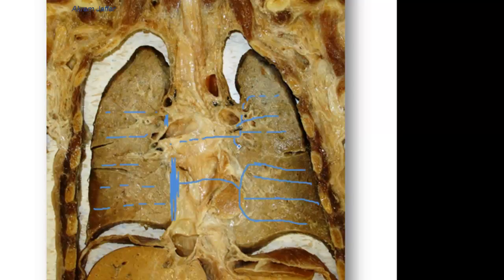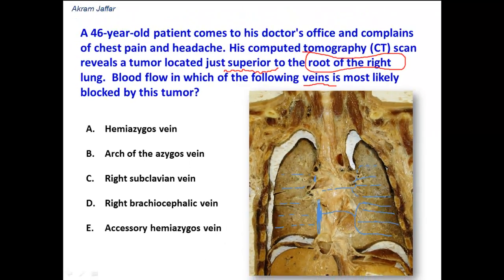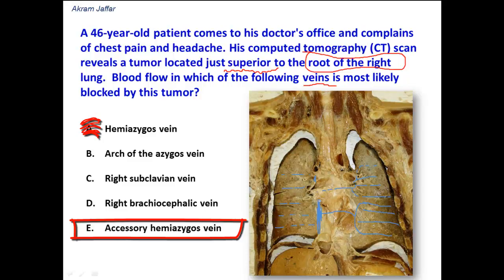Both the hemiazygous vein and the accessory hemiazygous vein are located on the left side and cross from the left side to the right side, joining the azygous vein which is located on the right side. But they join the azygous vein below the root of the lung. So this option is wrong — the hemiazygous vein is not related to superior to the root of the right lung, and the same applies to option E, the accessory hemiazygous vein.